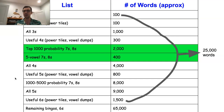We talked a little bit about probability in one of the earlier videos, and we'll be revisiting that concept in detail today. I also included a bonus row here on the five-vowel sevens and eights. There's only about 400 of these words, so it's not a particularly lengthy list, but it's one I studied very early on when I was starting Tournament Scrabble, and I found it to be extremely useful and a list that was often overlooked.